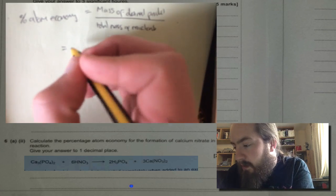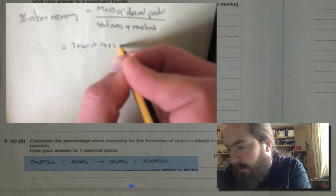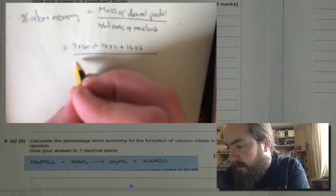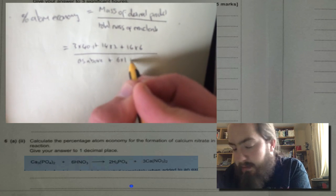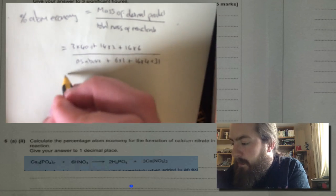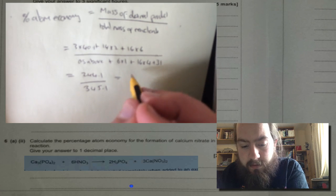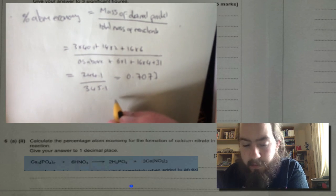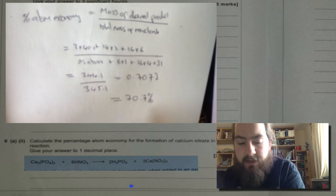We've got three calciums, so that's 3 times 40.1, plus two nitrogens, 14 times 2, plus six oxygens, 16 times 6, all divided by the answer to that part. And six hydrogens, so 6 times 1, plus another four oxygens, 16 times 4, and a phosphorus, 31. That'll give you 244.1 divided by 345.1, which is 0.7073. To get percentage you times that by 100, and we want it to one decimal place, so we end up with 70.7%. That's quite a high atom economy.